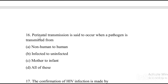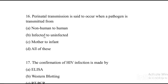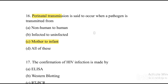Next question: Perinatal transmission is said to occur when a pathogen is transmitted from — Option A: non-human to human. Option B: infected to uninfected. Option C: mother to infant. Option D: all of the above. The answer is Option C, mother to infant. Perinatal transmission means transmission from mother to infant.